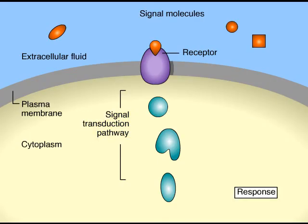In the third stage of cell signaling, the transduction process brings about a cellular response. This can be any of many different cellular activities, such as activation of a certain enzyme, rearrangement of the cytoskeleton, or activation of specific genes.